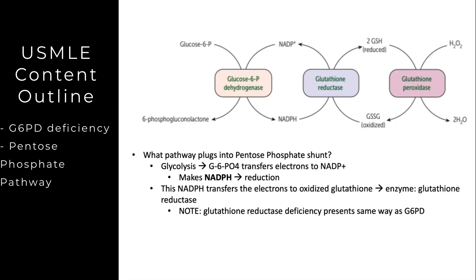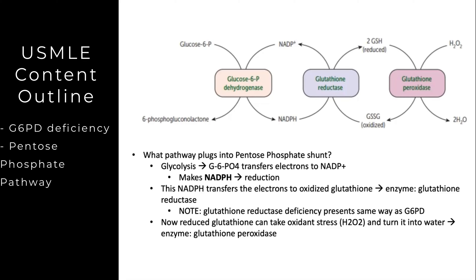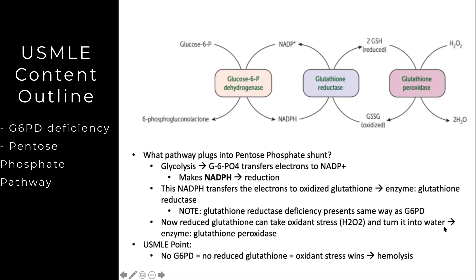Interestingly, as a critical thinking point, glutathione reductase deficiency presents the same way as G6PD deficiency, because you can't achieve the end goal. In G6PD deficiency questions, it is always worded as some sort of stress — by a medication or a food — and then you get hemolysis, breaking of the actual RBC. With reduced glutathione, you can take oxidant stress and turn it into water. USMLE point: no G6PD means no reduced glutathione, oxidative stress wins, and you get hemolysis.